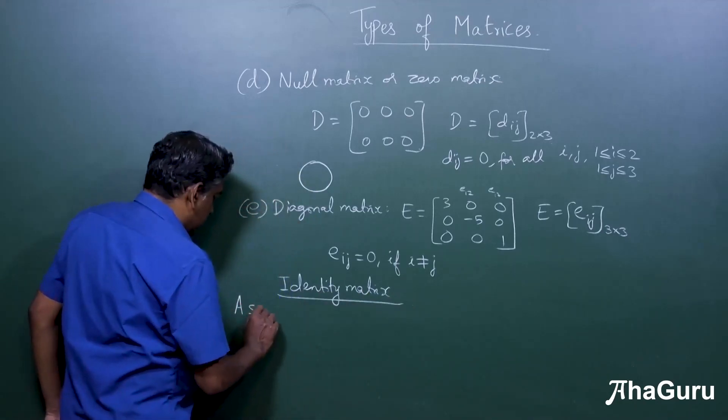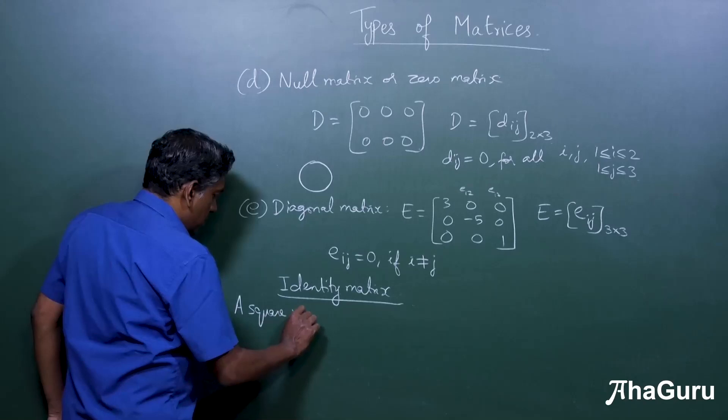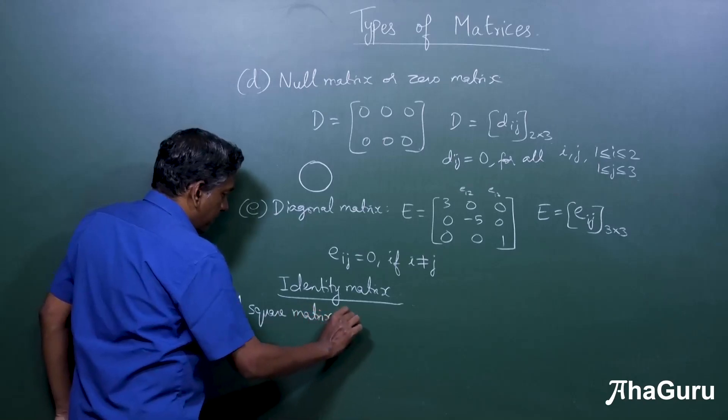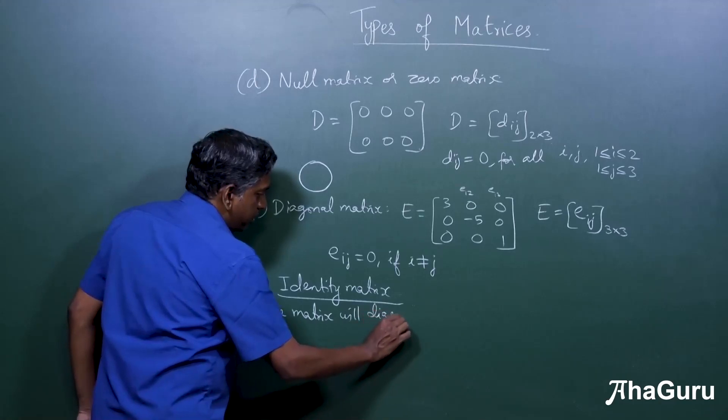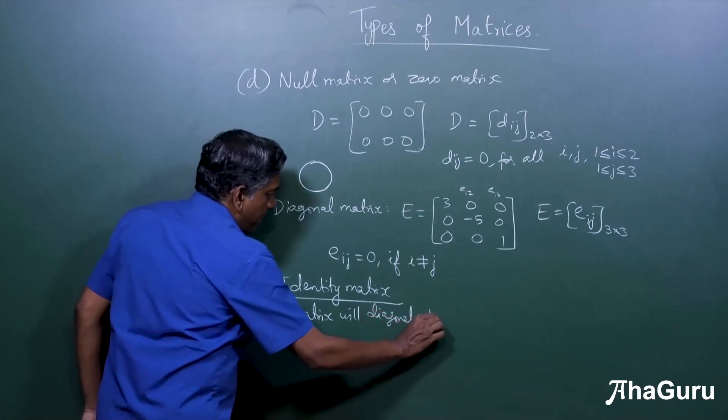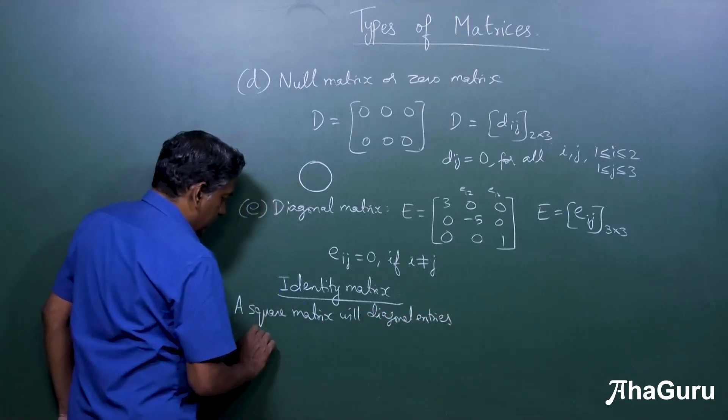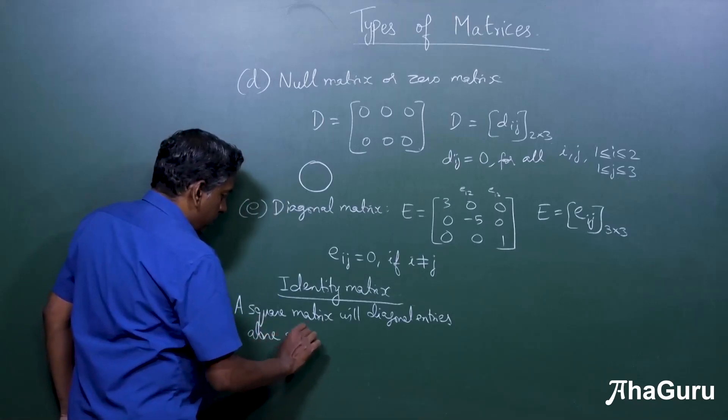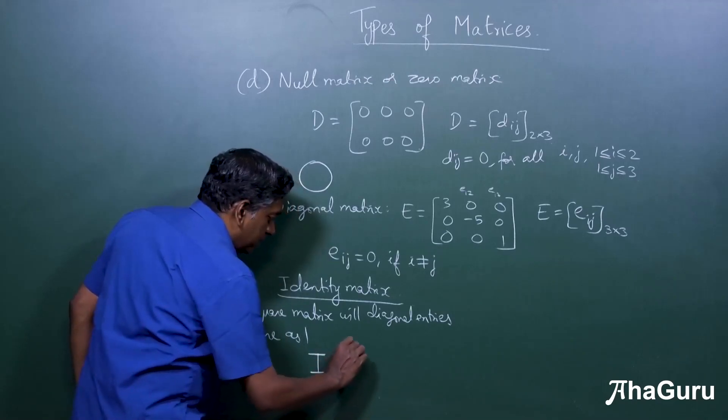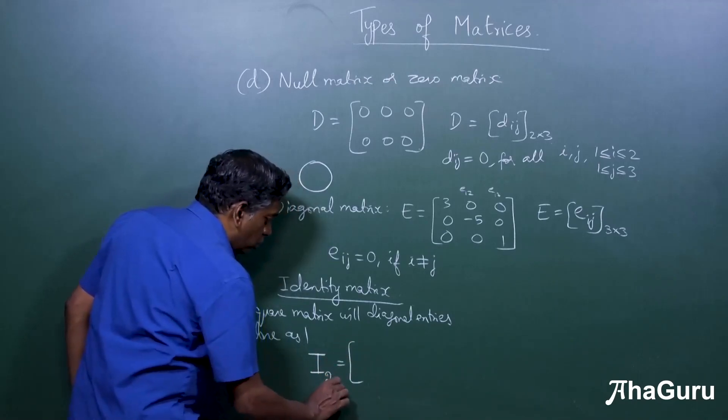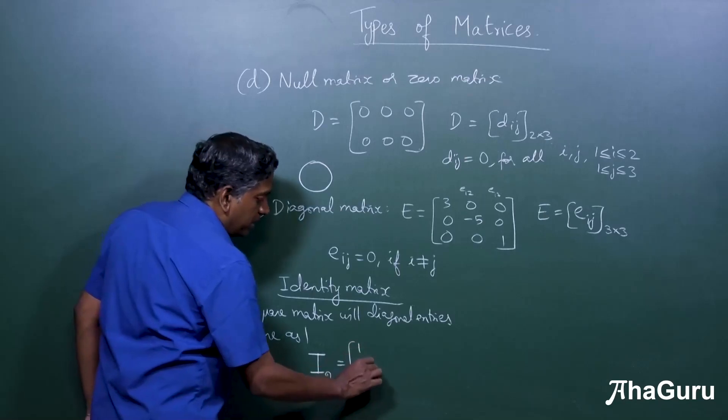This is a square matrix with diagonal entries alone as one. So this is usually denoted by the letter i, like i2, which is the two by two square matrix.